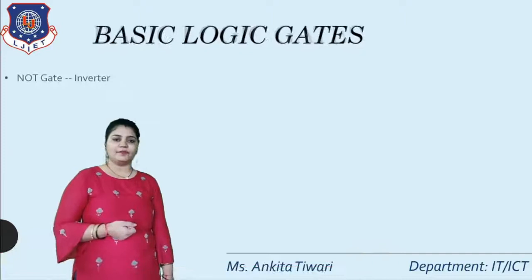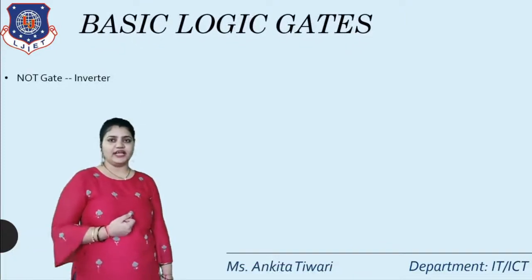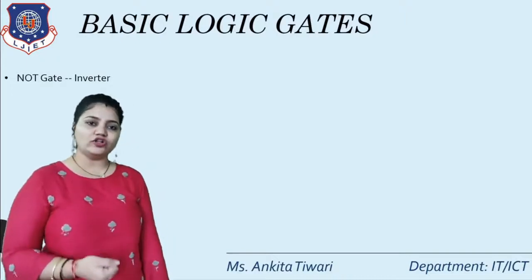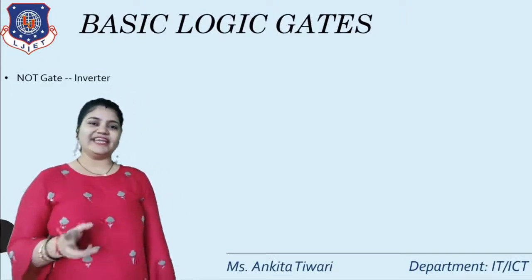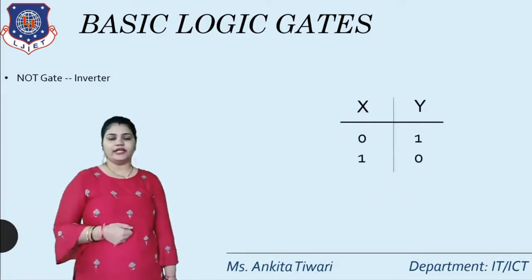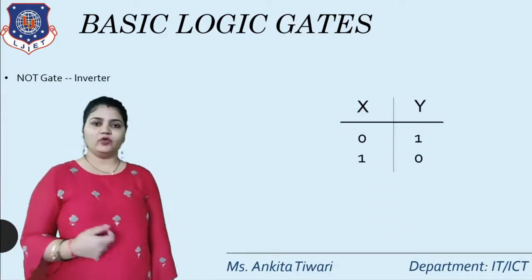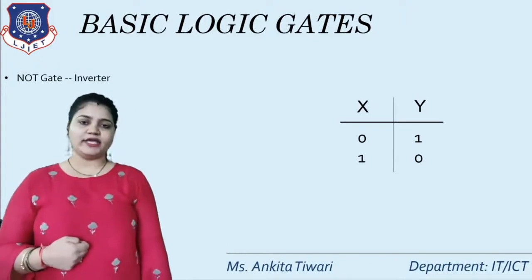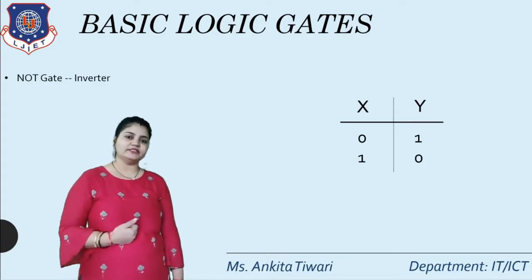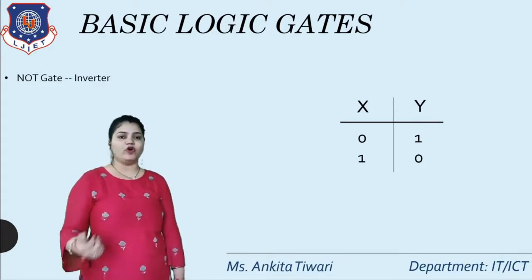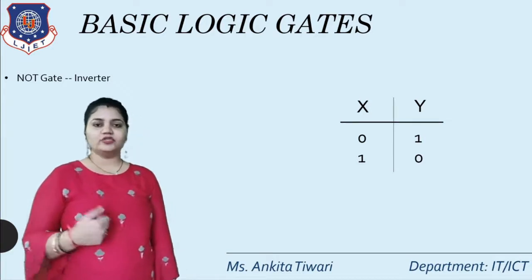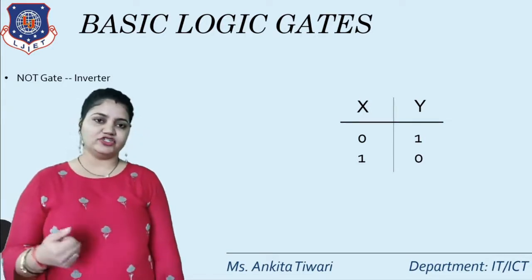Starting with Basic Logic Gates, the first gate is the NOT gate, also known as Inverter Gate, which negates the value provided as input. In NOT gate, only one input is provided. So N equals 1, and we will get 2 possibilities, that is 2 raised to 1 equals 2.